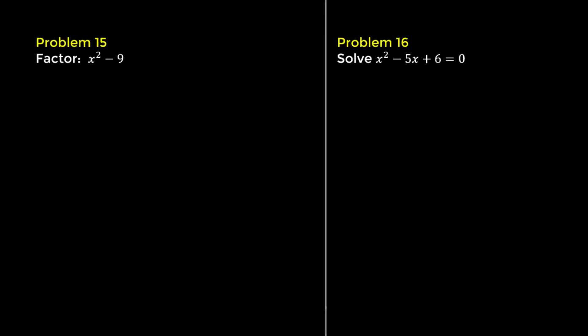Problem 15. Factor x squared minus 9. This is a difference of squares. We know x times x is x squared, so we put an x in each set of parentheses. We ask which number when multiplied by itself gives 9 — it is 3. Therefore, we put plus 3 in the first set of parentheses and minus 3 in the second, giving x plus 3 times x minus 3.